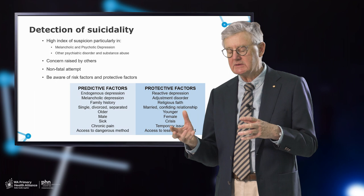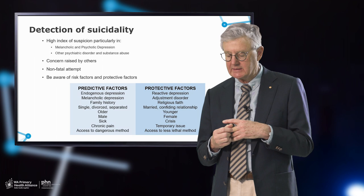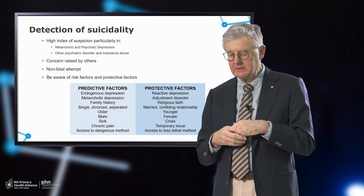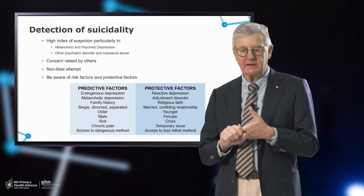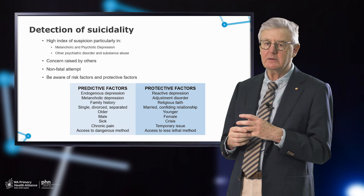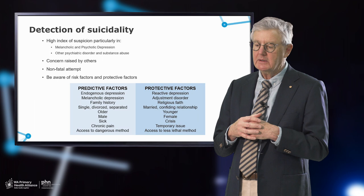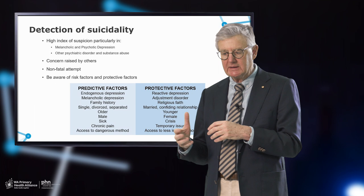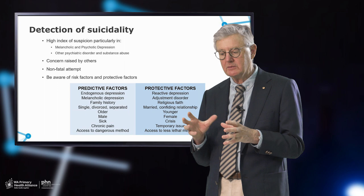It's important to be aware of predictive and protective factors. Predictive factors for increased suicide risk include lack of a confiding relationship, being isolated, older, male, and with a painful condition. Protective factors include a good relationship, still being married, having a supportive community, being reasonably well otherwise, and having a religious faith. You need to have those in the back of your mind when you have someone in front of you.